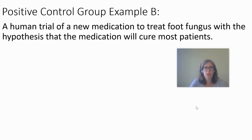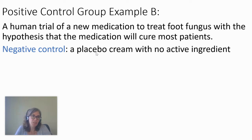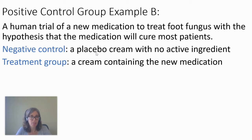Our next example: a human trial for a new medication used to treat foot fungus, with the hypothesis that the medication will cure most patients. Your negative control is going to be a placebo with no active ingredients. A placebo is something given to a patient where the patient doesn't know if it's the actual treatment or not. We call these double-blind placebo studies. The treatment group would be the cream containing the new medication. If this is done right, neither the doctors nor the patients should know who's getting the placebo cream and who's getting the real cream. The placebo cream has nothing in it that will do anything — it'll be some regular old skin cream. In a medication study done orally, you might give people sugar pills — something that shouldn't have any positive effect on curing the patient.